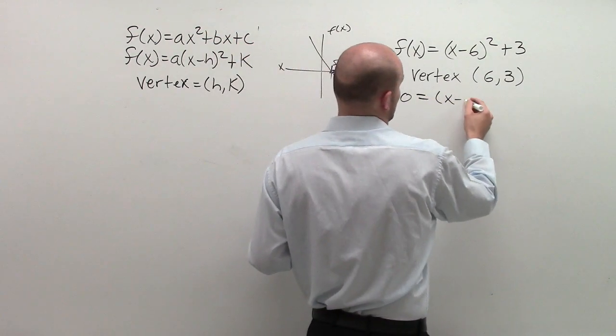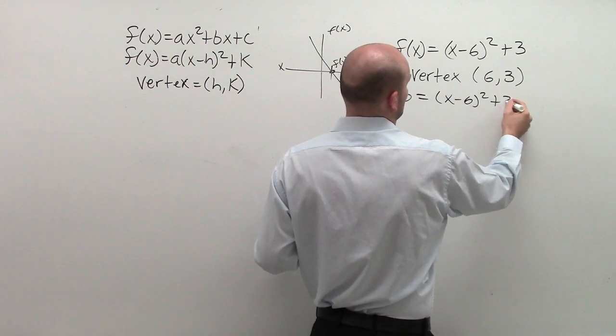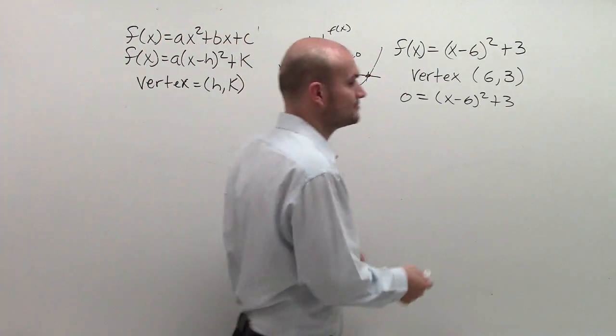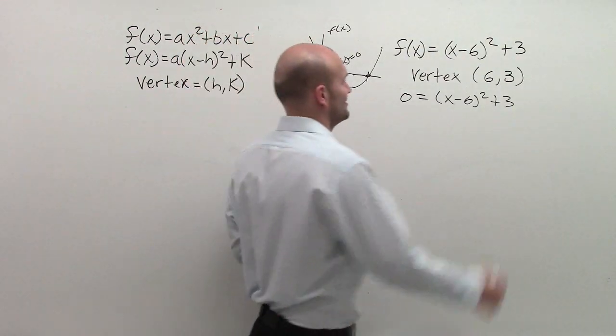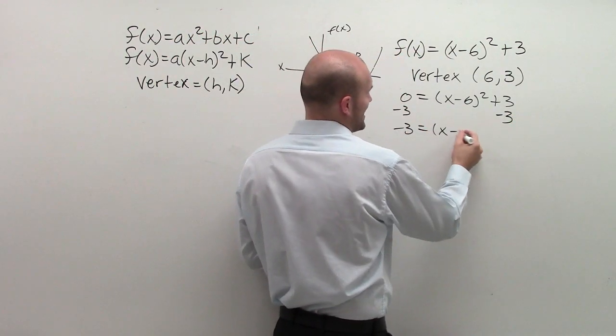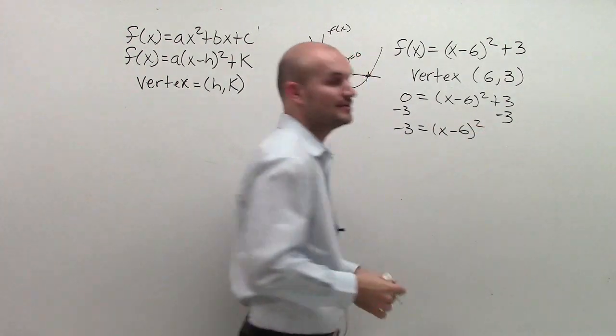So zero equals (x - 6)² + 3. Now what I simply need to do is isolate my variable. Subtract 3: negative 3 equals (x - 6)².